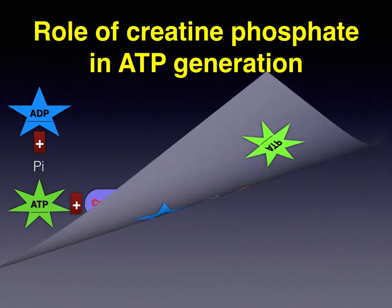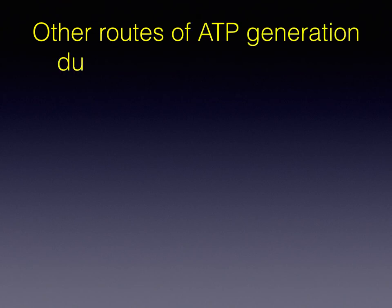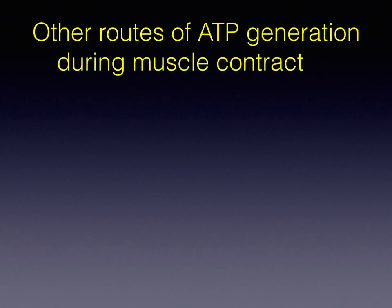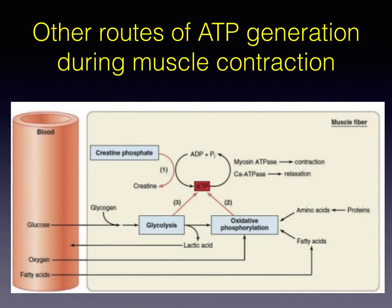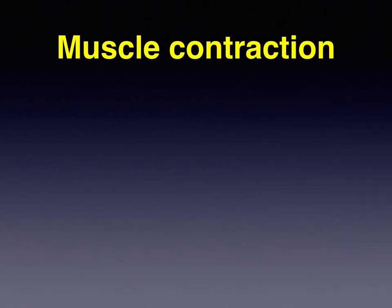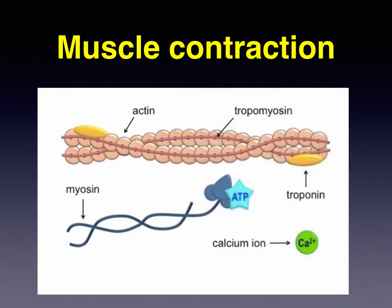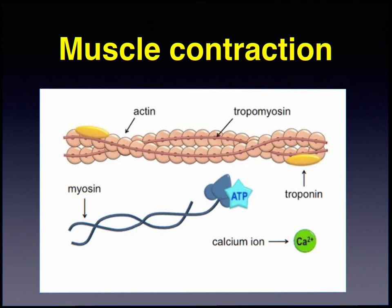The other energy-generating mechanisms like aerobic respiration and anaerobic glycolysis also occur, but take a relatively longer period. Hence, stores of creatine phosphate and ATP provide enough energy for initial maximal muscle contraction.